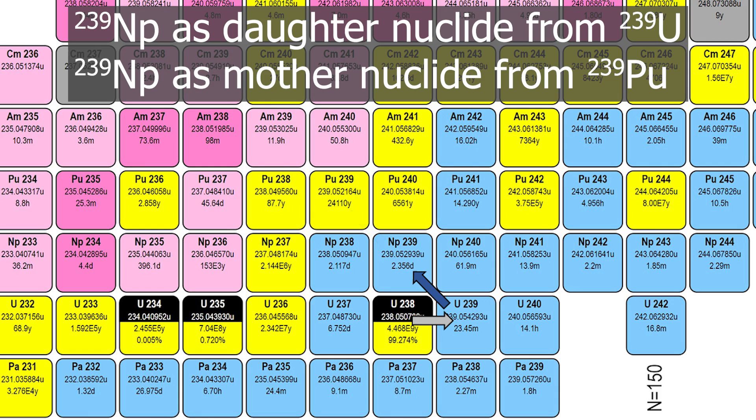This short-lived Neptunium isotope doesn't have much more relevance to it, other than it being involved in the earlier stages of the transuranium element synthesis through neutron bombardment. Due to its short half-life, Neptunium-239 can be neglected in burn-up and disposal.